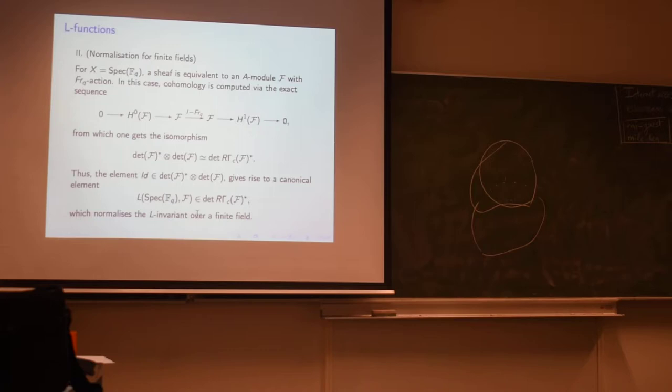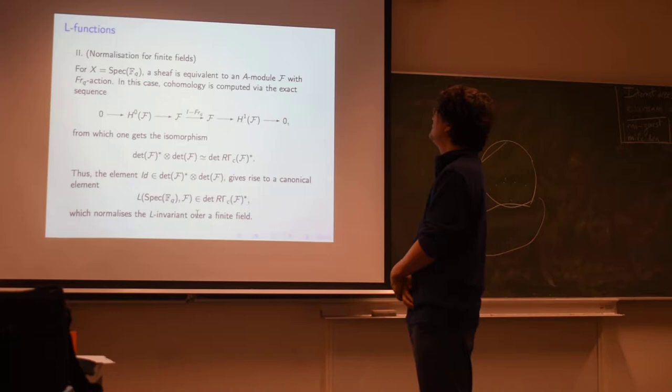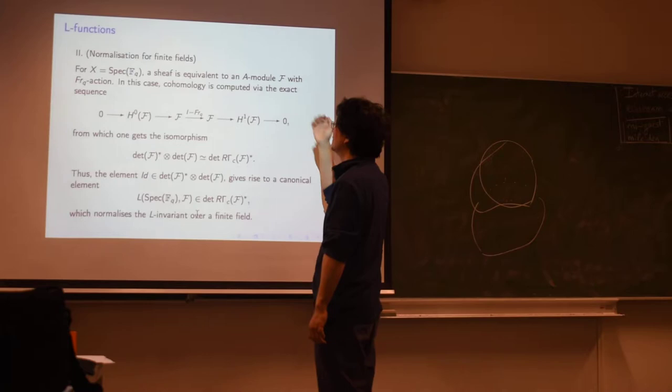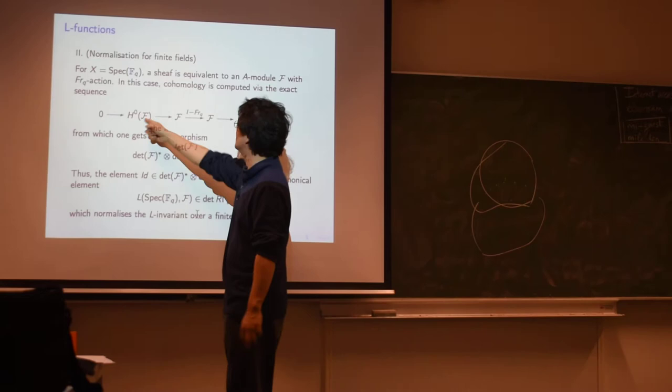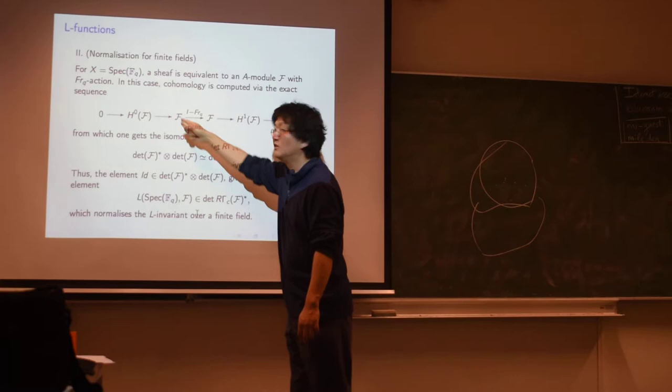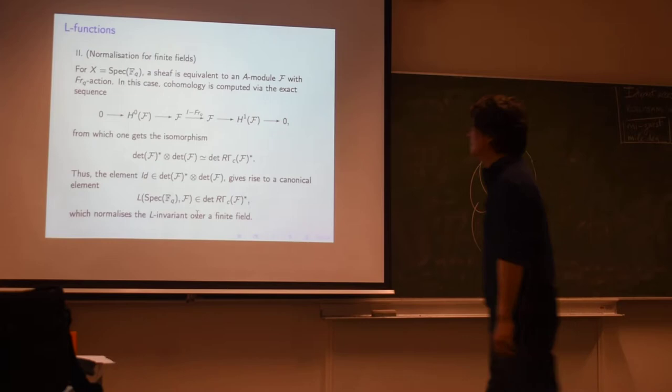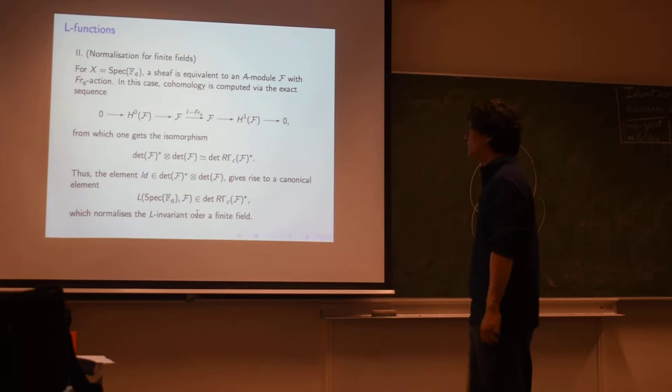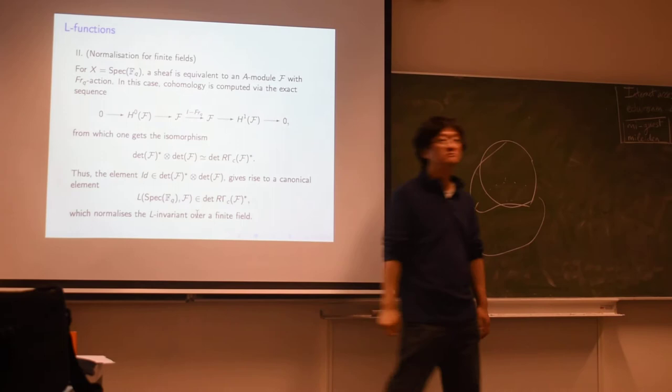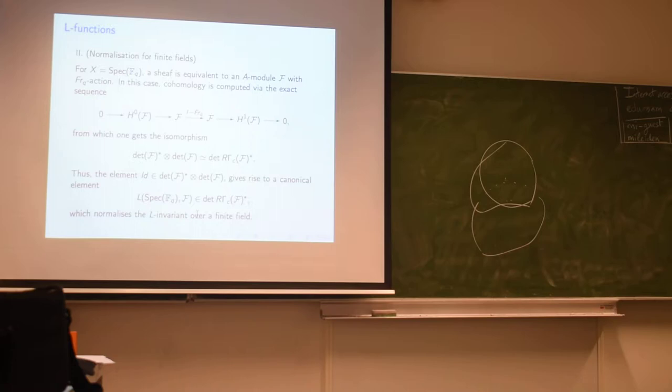Then there's a normalization for finite fields. So if X is a spec of a finite field, then you compute its cohomology. Well, it's just a module with Frobenius action. So you compute its cohomology using this complex, 1 minus Frobenius, whose kernel is H⁰, whose cokernel is H¹. So then, the determinant of cohomology of these two sides will be isomorphic to the determinant of this complex in the middle simply. So that's determinant F dual tensor determinant F. But this thing here has an identity element in it that gives you a natural element inside this determinant cohomology of F. So the normalization is that over finite fields, this should be the L-invariant of a sheaf. So this is the only natural way to get the L-invariant of a sheaf over a finite field.